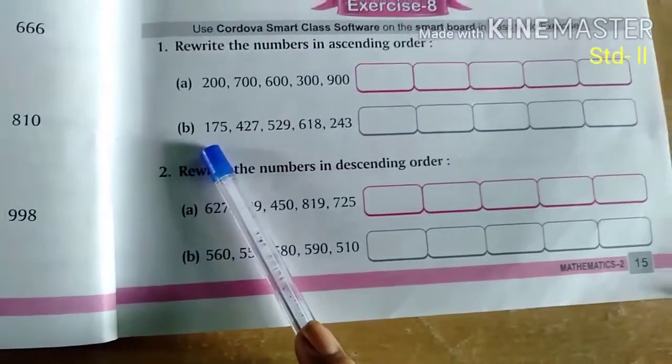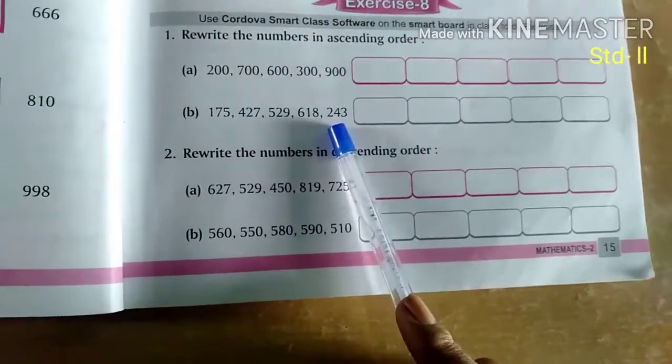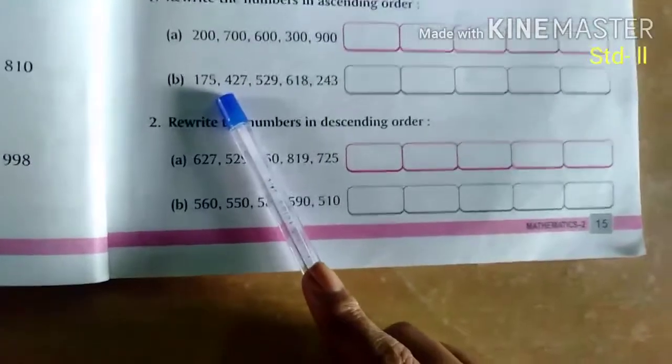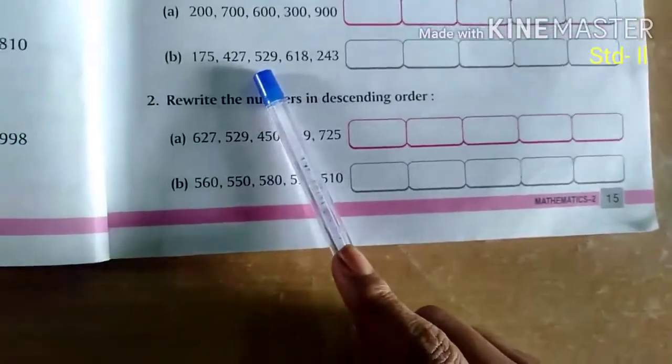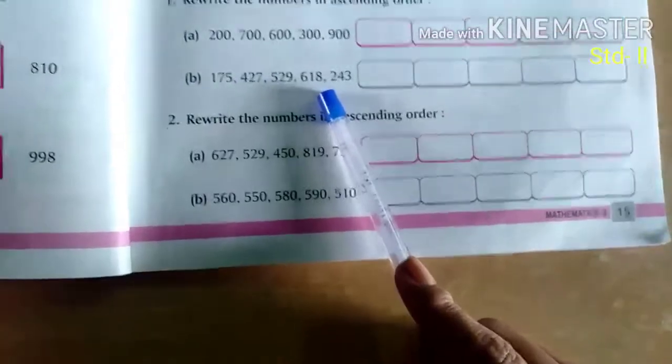175. After that comes 243, after that comes 427, then comes 529 and then comes 618.